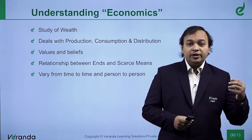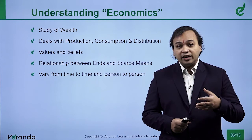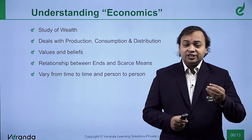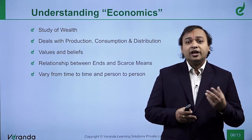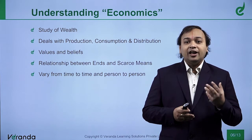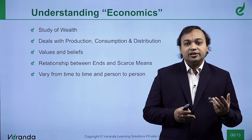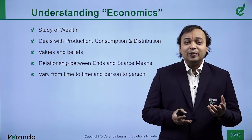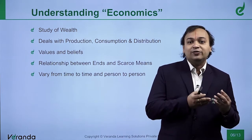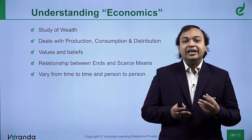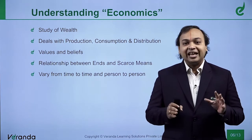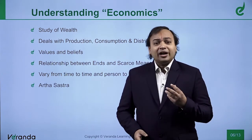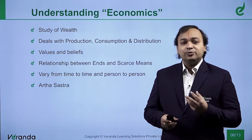Wants also change as a person grows. At around 15 years of age, a person may want a bicycle, scooter, or bike. At the age of 25, they may be looking for a car. Both are automobiles, but the expectation is different. At 45 or 50, they prefer something driven by others so they can relax sitting at the back. So what we have to understand is that wants vary from time to time and person to person.